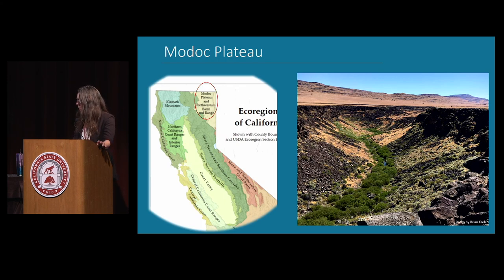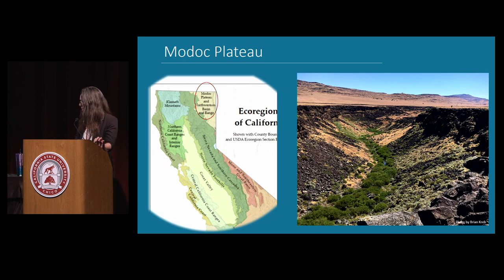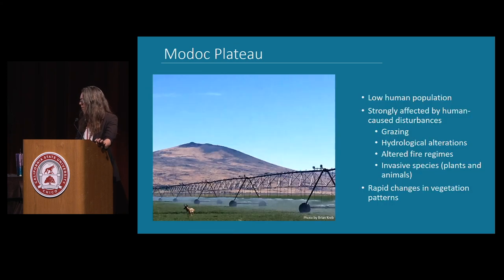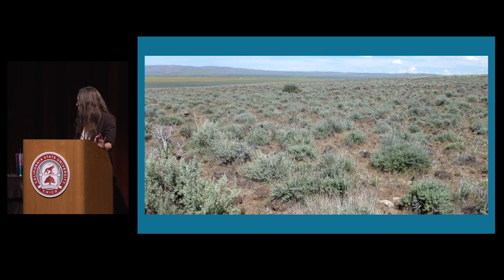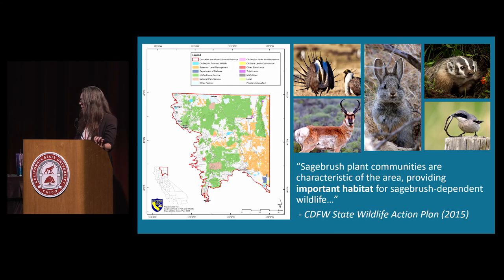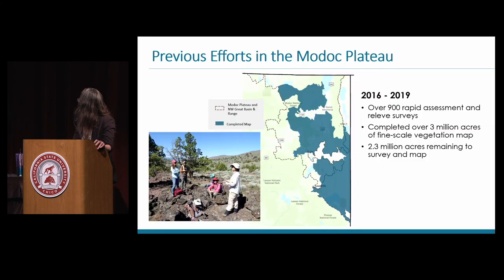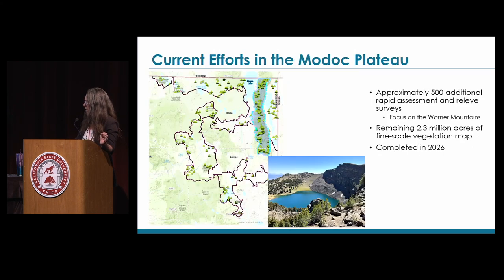I have five minutes to go through the Modoc Plateau. The Modoc Plateau and northwestern basin and range ecoregions are characterized by deep basalt flows and ash and pumice deposits. It's a cold desert with an elevation range of 4,000 to almost 10,000 feet. Precipitation is only about 11 to 40 inches per year. These ecosystems are among the most threatened in North America. It's characterized by sagebrush with many sagebrush-dependent wildlife such as sage-grouse and pygmy rabbit. We prioritized this area in 2015 for classification and mapping — 2.3 million acres of the region remained unmapped in 2021, which is why we decided to focus here.